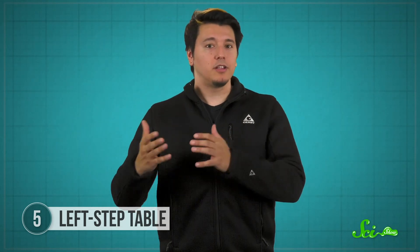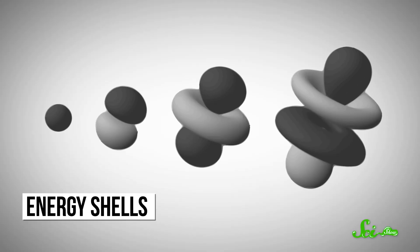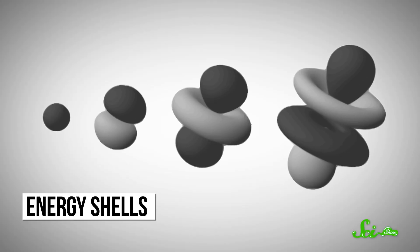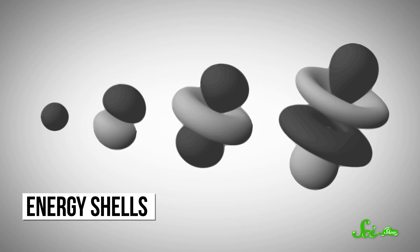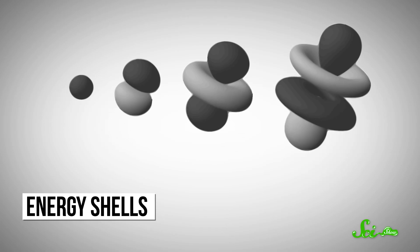Having a handy reference for how an element's energy shells fill up is useful for a lot of scientists. Each shell has one of several basic shapes, and every shape can hold a different number of electrons. For historical reasons, the shapes have confusing names. The first four are called S, P, D, and F.